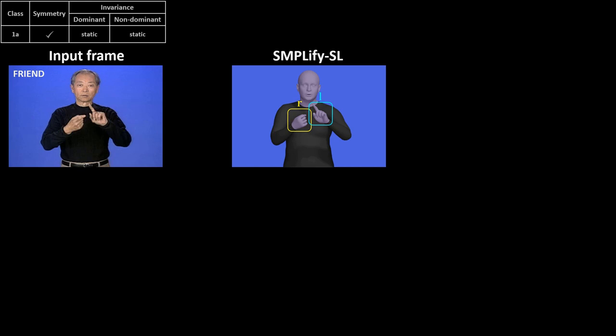Signify applies a symmetry constraint for sign classes where the two hands have the same pose, such as class 1A. This term penalizes differences in pose between the left and right hands.